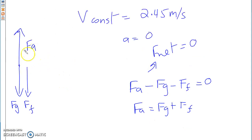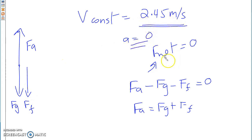Imagine I have an object moving through the air upward. In this scenario I have F applied moving up, FG going downward, and F air friction going downward. If my object is moving at constant velocity, acceleration is zero, F net is zero. My system equation: F applied upward minus FG downward minus FF downward equals zero, so F applied equals FG plus FF.